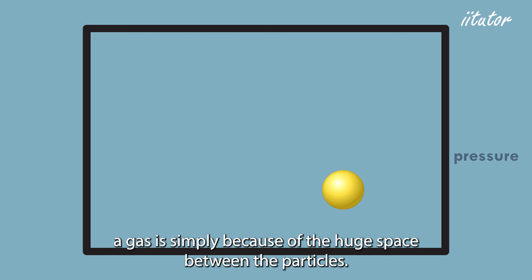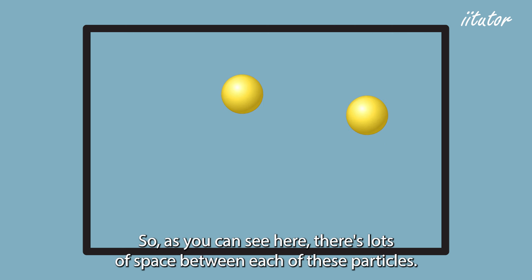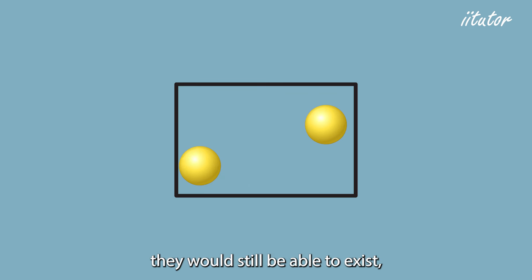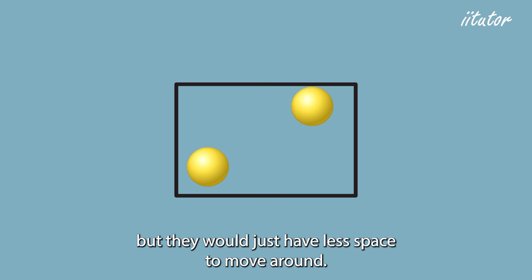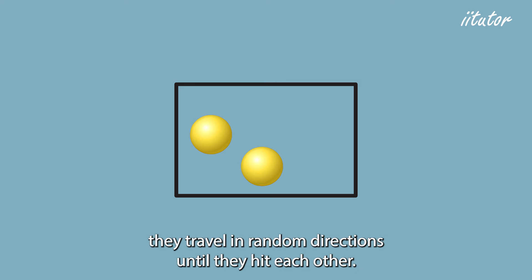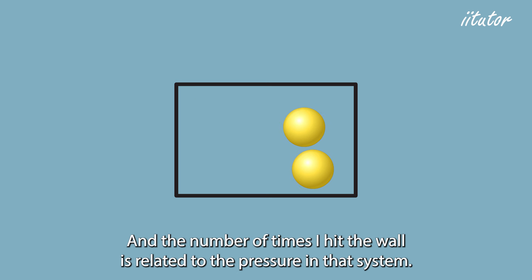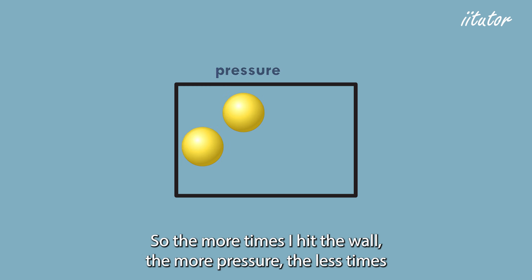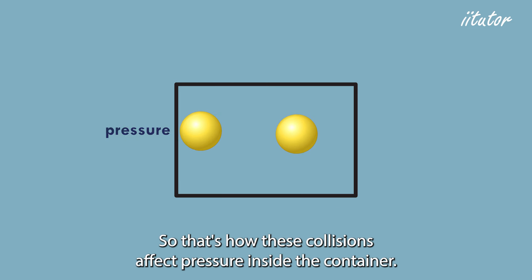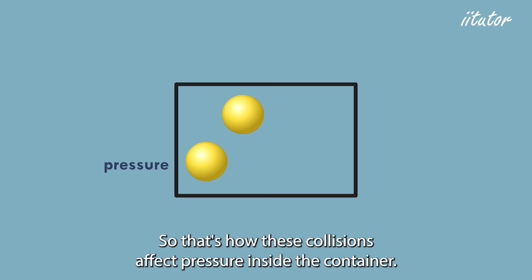The reason we can compress a gas is simply the huge space between particles. If we squash the volume down, they still exist but have less space to move around. In the animation, particles travel in random directions, hit each other, and also hit the wall and bounce off. The number of times they hit the wall is related to the pressure — more hits means more pressure, fewer hits means less pressure.